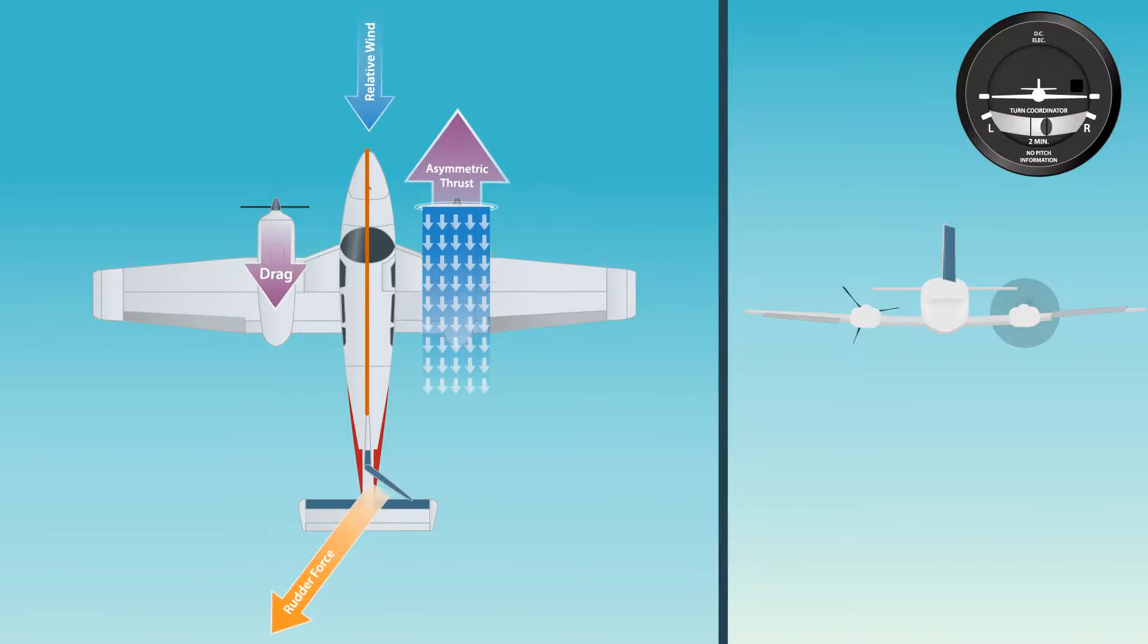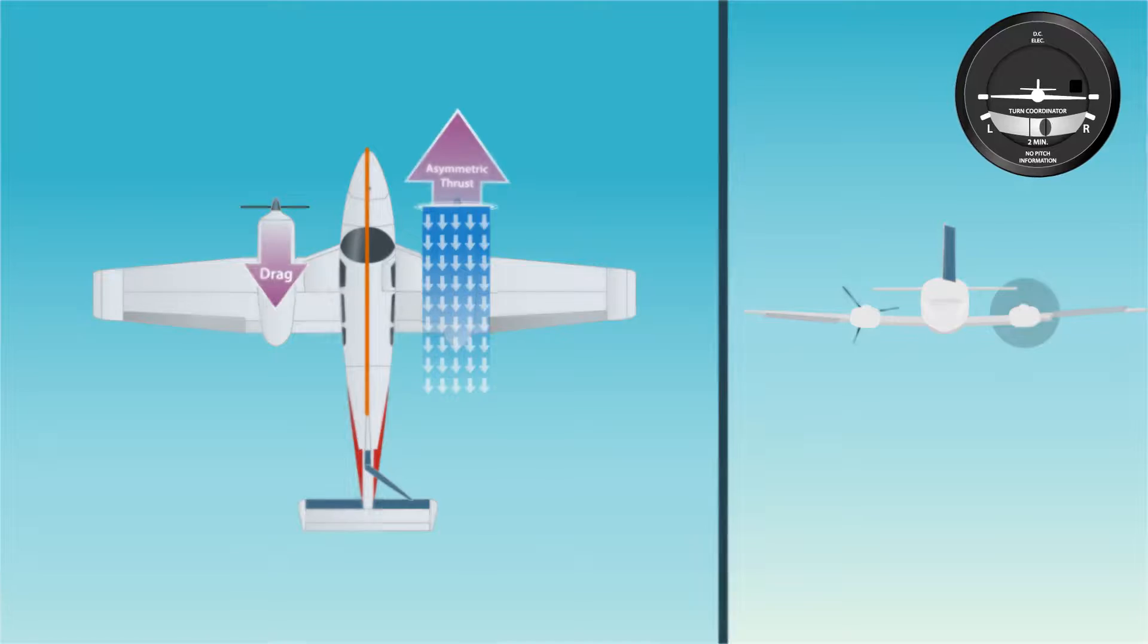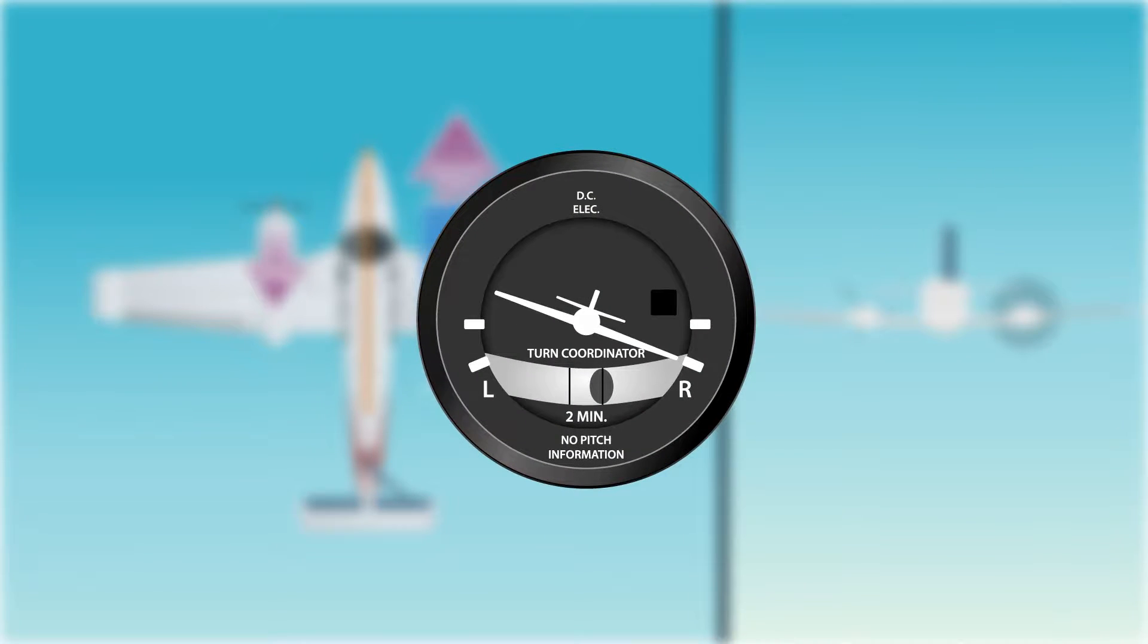This zero sideslip ball position for straight flight would also be the same position for turning flight. The actual bank angle for zero sideslip varies among airplanes from one and a half to two and a half degrees. The position of the ball varies from one-third to one-half of a ball width from instrument center toward the operative engine.